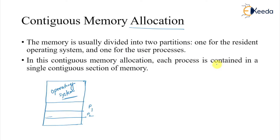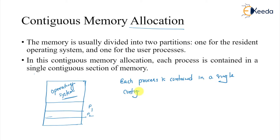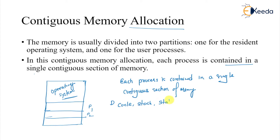In contiguous memory allocation, each process is contained in a single contiguous section of memory. Whatever the requirements — stack, data section, static data section, and heap — all are in a single contiguous memory allocation.